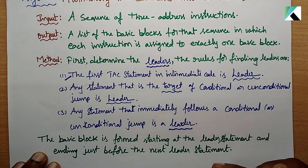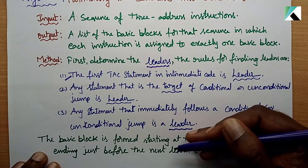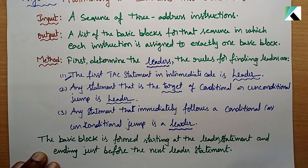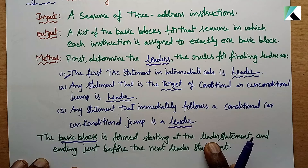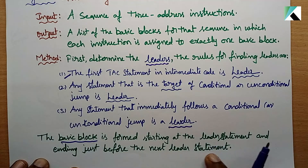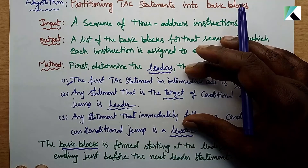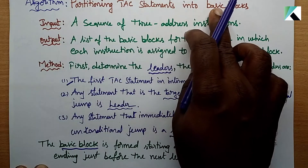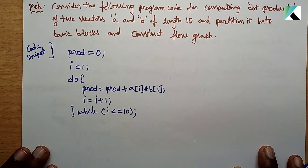Rule three: any statement that immediately follows a conditional or unconditional jump is also a leader. Once you identify a conditional or unconditional jump, the statement immediately after it is a leader. These three rules allow us to partition TAC statements into Basic Blocks.